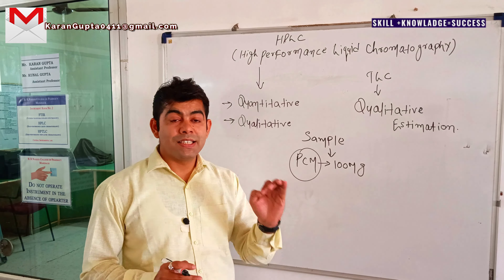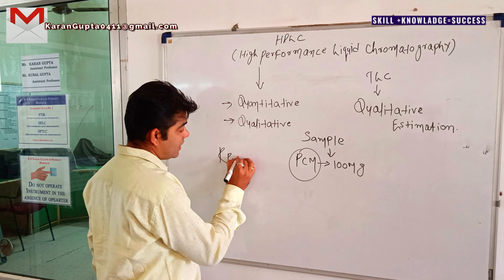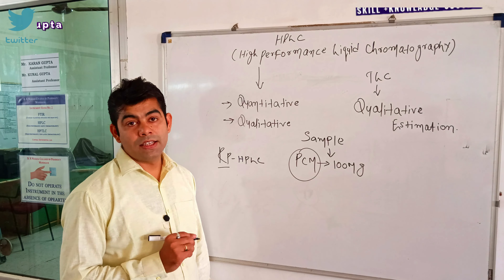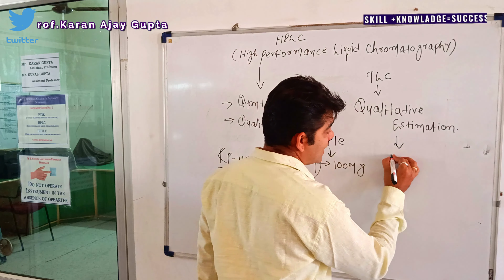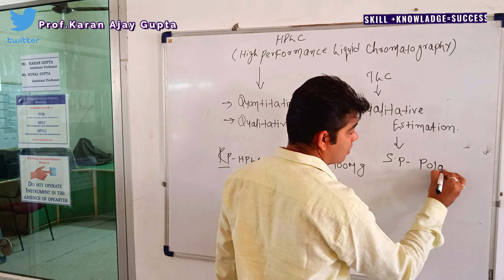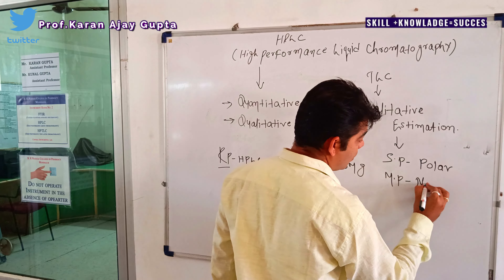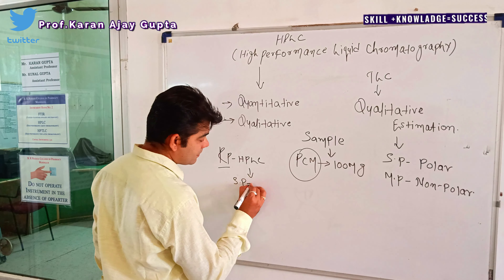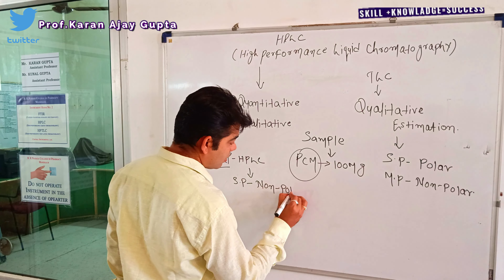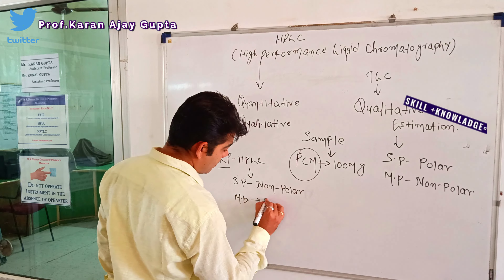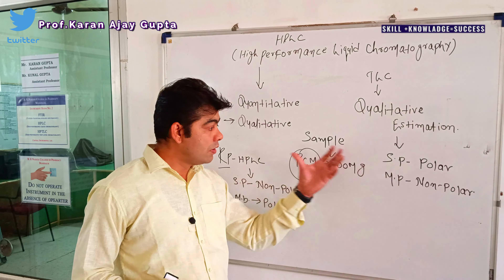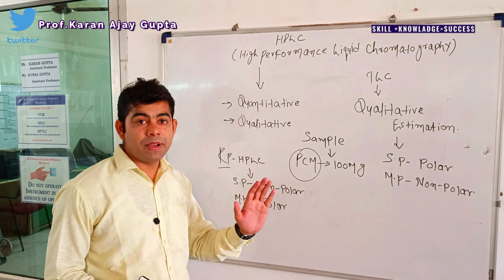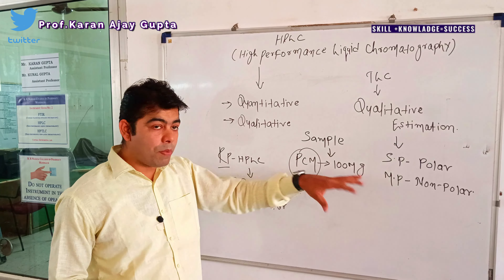One more thing: HPLC is also called RP-HPLC, which is another name for HPLC. RP stands for Reverse Phase. The reason is that in TLC, the stationary phase is polar and the mobile phase is non-polar. But in HPLC, the stationary phase is non-polar and the mobile phase is polar. So HPLC is the reverse of TLC — that is why HPLC is also called Reverse Phase or RP-HPLC or Reverse Phase Chromatography, because it is the opposite of TLC.